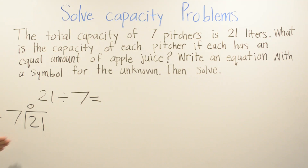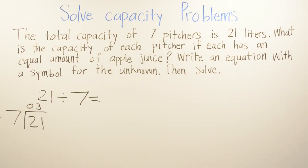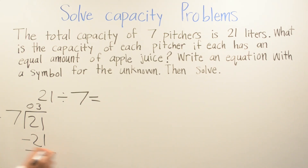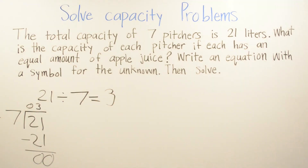How many times does 7 go into 21? 7 times 1 is 7, 7 times 2 is 14, and 7 times 3 is 21. So we are going to subtract by 21 because 7 times 3 equals 21. So your answer will be 3. There are 3 liters in each pitcher.